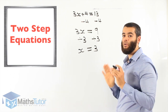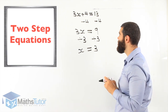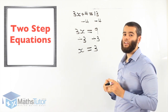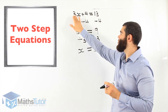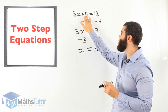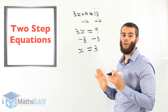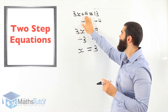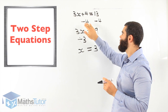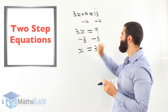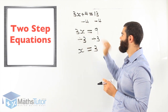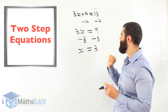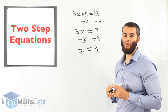The most important part to know is which numeral do I get rid of first — the 3 or the positive 4? Always start with the furthest one away from x. The furthest one away is 4, so we start with that one first: minus 4 minus 4, giving 3x equals 9, then divide by 3, giving x equals 3.